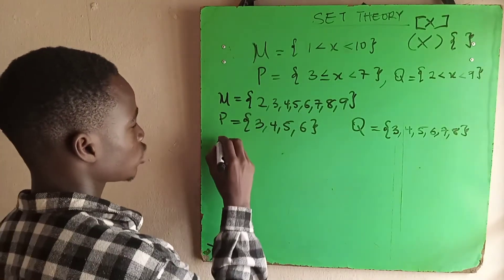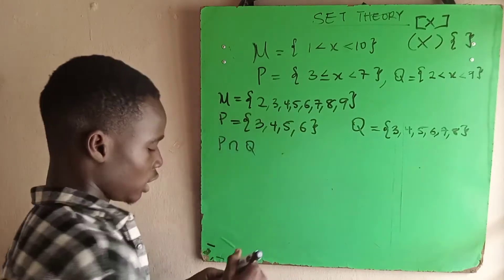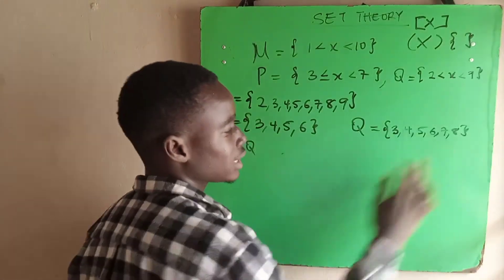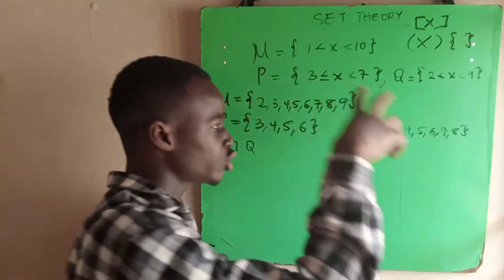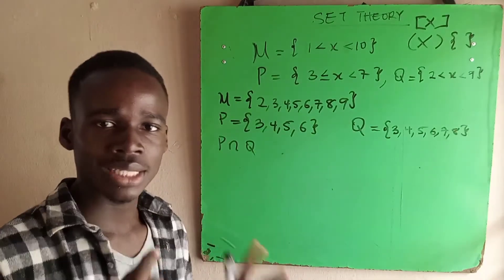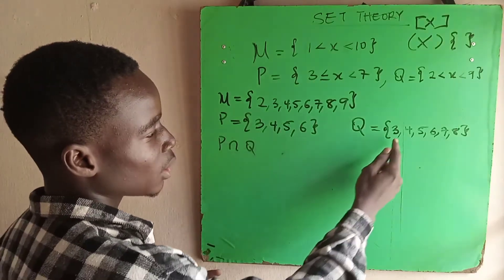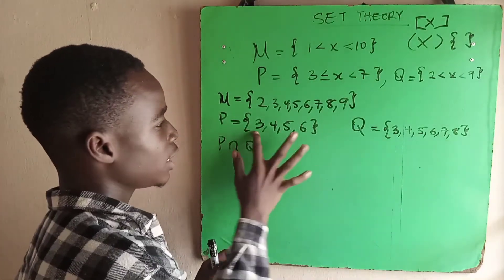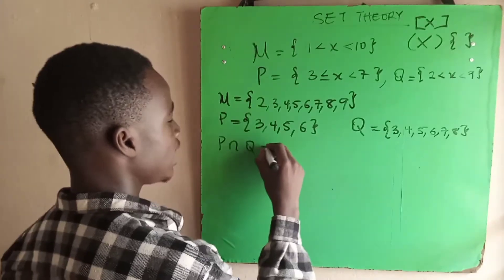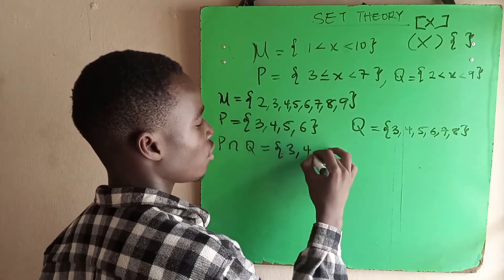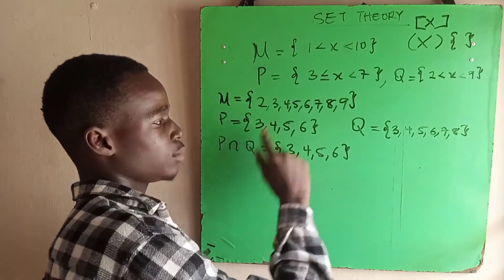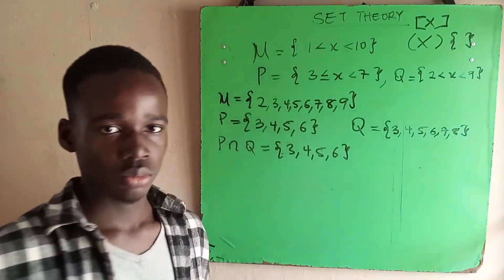The first thing we've been asked to do is find P intersection Q. What does intersection mean? We are asked to find the intersection between P and Q. We look at the elements in P and Q. What element is in P and is also in Q? We have 3, 4, 5, 6 in P, and 3, 4, 5, 6, 7, 8 in Q. So P intersection Q will be 3, 4, 5, 6. Remember the curly bracket.